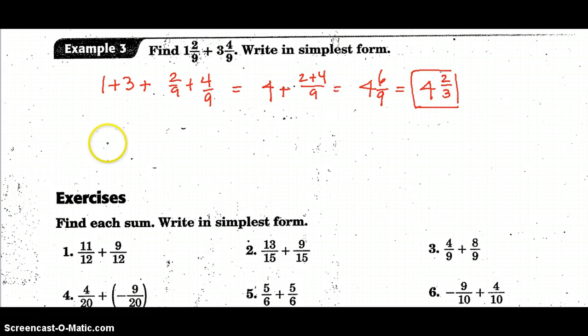However, I also want you to know that you could turn it into an improper fraction. Nine times one is nine plus two is 11-ninths plus nine times three is 27 plus four is 31-ninths. We have common denominator of nine and 11 plus 31 is going to give us 42-ninths. That will also simplify. Three goes into both and it's 14-thirds. If you check it, three goes into 14 four times with two left over. So they're the same, 14-thirds or four and two-thirds.